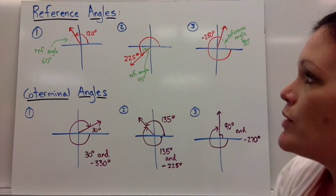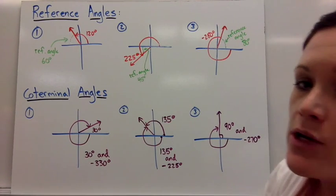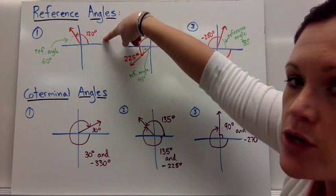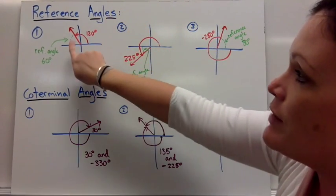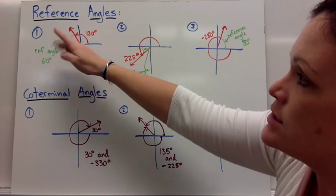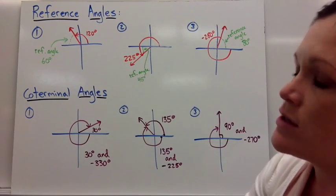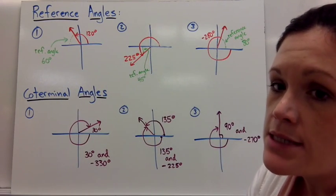Alright. The first three examples are reference angles. A reference angle means, for instance, if I'm given this red angle of 120 degrees, the reference angle is the shortest distance from the terminal side to the x-axis. So just that leftover part right there would be the reference angle, and that's 60 degrees.